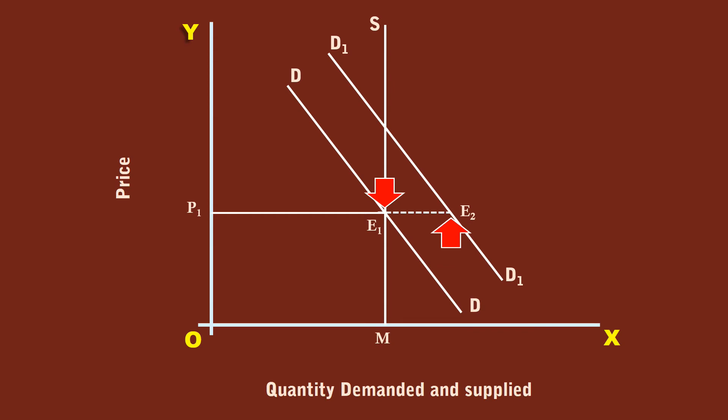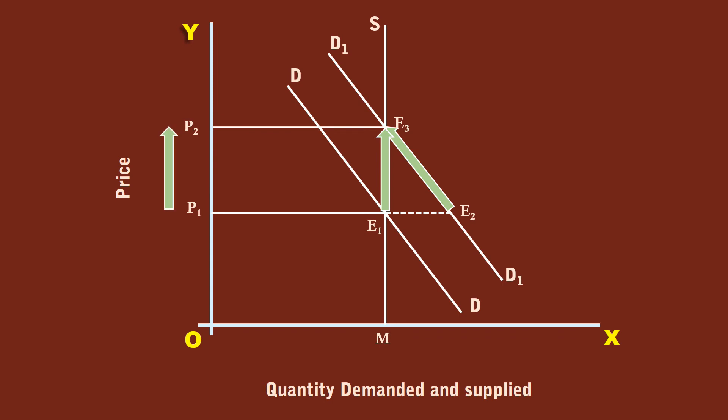The competition among the buyers pushes up the price along the demand curve D1D1. But the sellers want to take full advantage of the new demand condition and fix the supply at M and move along the supply curve MS. Finally, a new equilibrium is reached at E3. The new price is P2, which is higher than P1. The net result is an increase in the price from P1 to P2 and no change in quantity. The full impact of increase in demand is taken care of by the price.